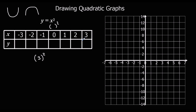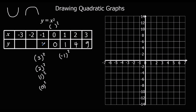3 squared is 9. 2 squared is 4. 1 squared is 1. 0 squared is 0. Minus 1 squared — this is where the brackets are really important — minus 1 times minus 1 is positive 1. Minus 2 squared is positive 4. And minus 3 squared is positive 9.